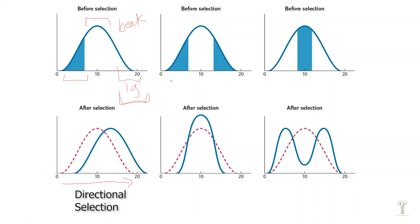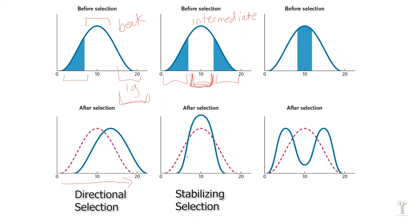In another population, using the same beak example — small, intermediate, and large beaks — if there is an environmental change that favors the intermediate trait, the population is going to favor the intermediate phenotype. This is called stabilizing selection, and the population will change so that there are more organisms showing that intermediate trait.